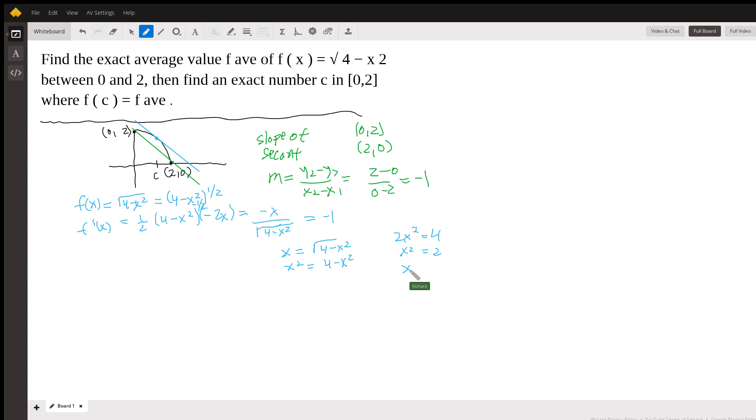So, x would be plus or minus square root of 2. But we only need to worry about the positive square root of 2. Because we're only interested in the interval on the right-hand side. And that's been given to us by the problem. We're only considering between 0 and 2. So, this is just telling us that the c here is the square root of 2.